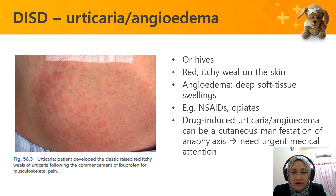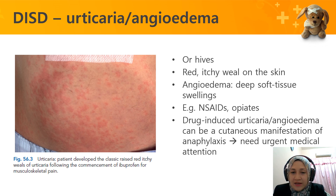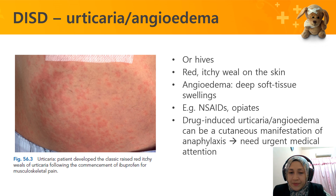The second type is urticaria or angioedema — hives. Urticaria means itchy red welts; angioedema is deep soft tissue swelling. Drugs that can cause this include NSAIDs and opioids. Drug-induced urticaria or angioedema can be a cutaneous manifestation of anaphylaxis, requiring urgent medical attention, as some cases can lead to anaphylactic shock.